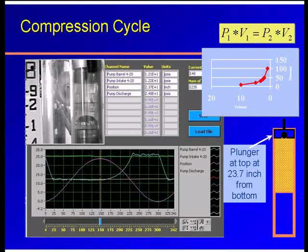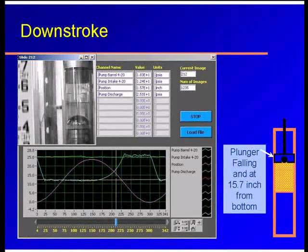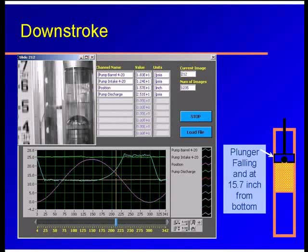Now, we're only looking at the downstroke here. Let's see what's happening on the downstroke. So I'm going to move to the next position, and you will see that the vertical line here has moved from this point to this point, indicating that the plunger has moved down. How far does it move down? Well, it was at 23 inches. Now it's at 15.7 inches. So we have moved down quite a distance.